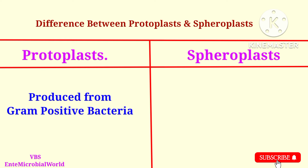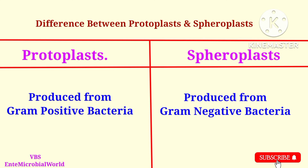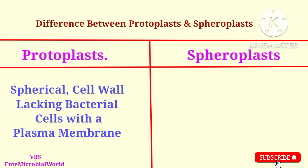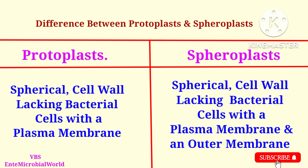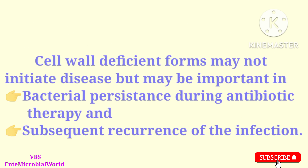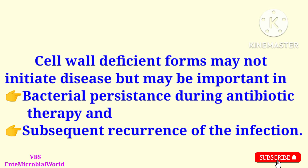Protoplasts are produced from gram positive bacteria. Spiroplasts are produced from gram negative bacteria. Spherical, cell-wall-lacking bacterial cells with a plasma membrane and an outer membrane are called spiroplasts. Finally, we are going to see the medical importance of protoplasts and spiroplasts.